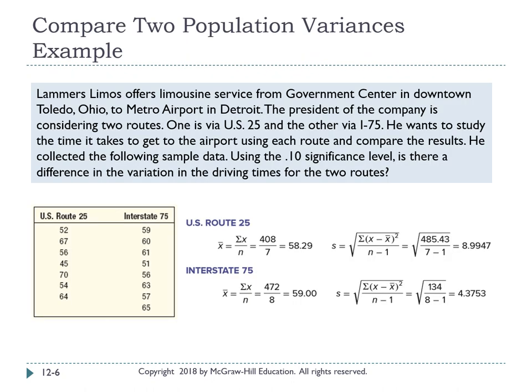Here is another example comparing two population variances. Lemus-Lymus offers limousine service. The president is considering two routes: one via US-25 and another via I-75. He wants to study the time it takes to get to the airport using each route and compare the results. He collected sample data shown in the yellow box. Using the 0.10 significance level, is there a difference in the variations in the driving times for these two routes? The word 'difference' indicates a two-tail test, and 'variation' means we use ANOVA.